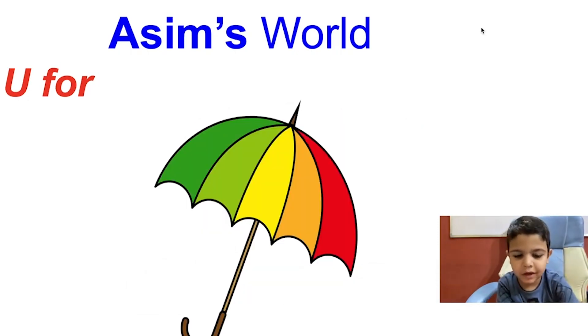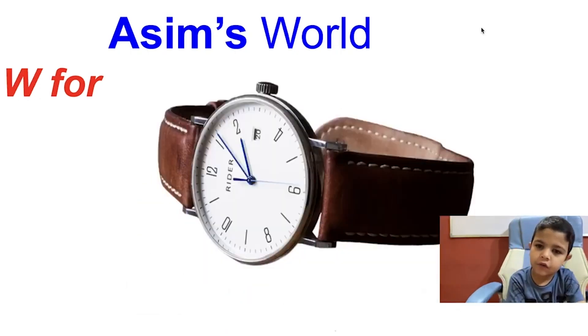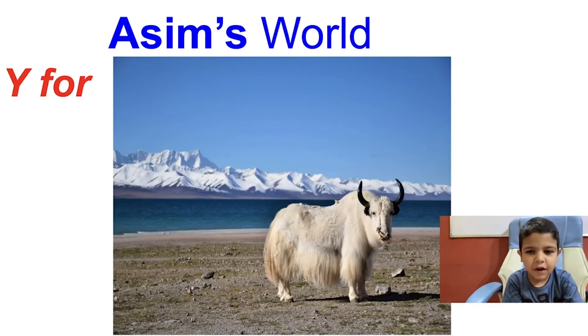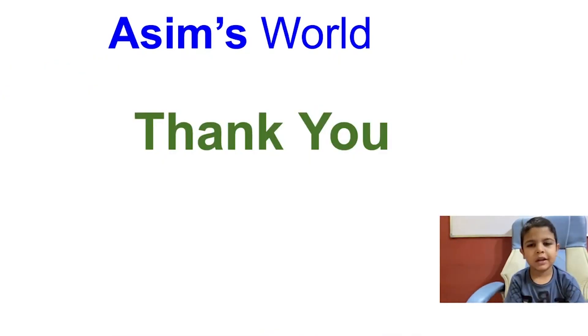U for umbrella. V for van. W for what. S for ice cream. Y for yak. D for devra.